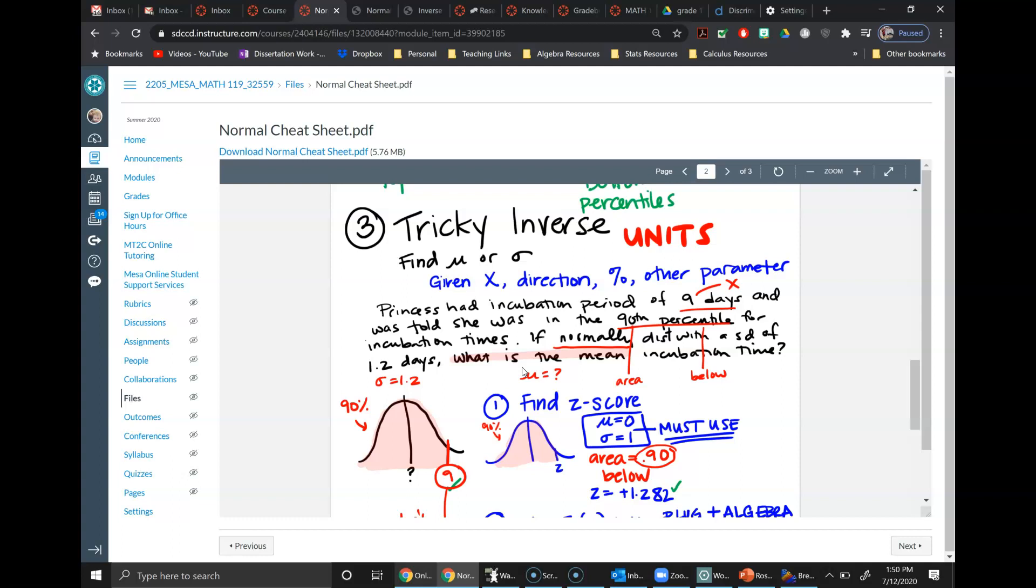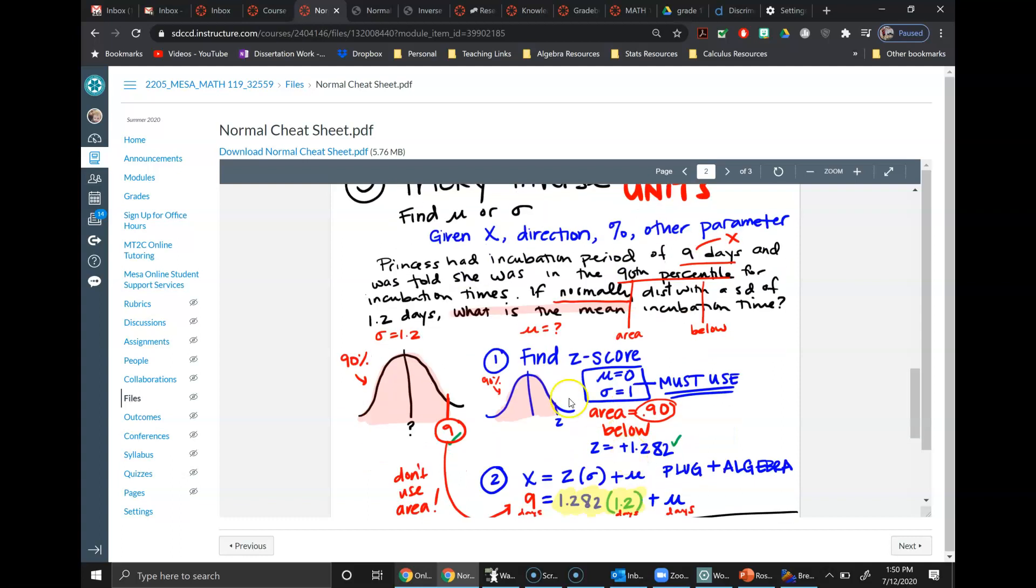And these ones you're asked to find the parameter, to find mean or standard deviation, which means you can't use these calculators as they're meant to be used because you're missing a piece. So what you have to do is do this in a two-step process. So in this case we have to find our z-score, so zero and two.